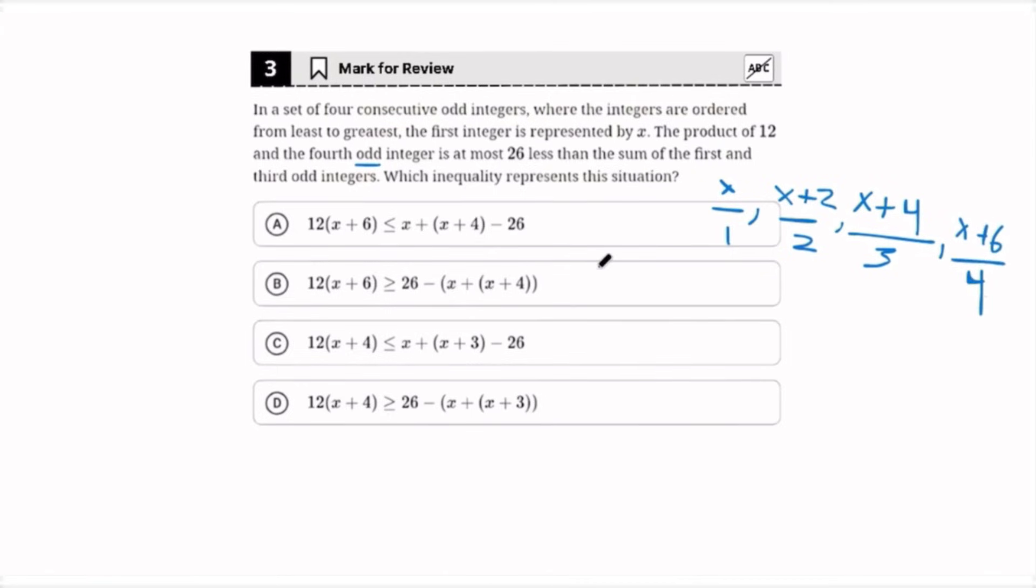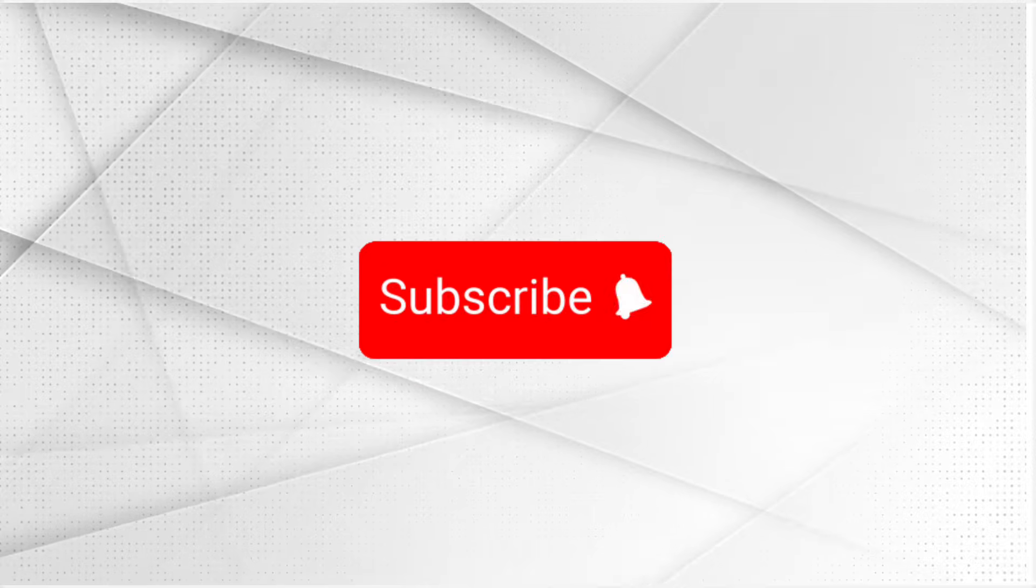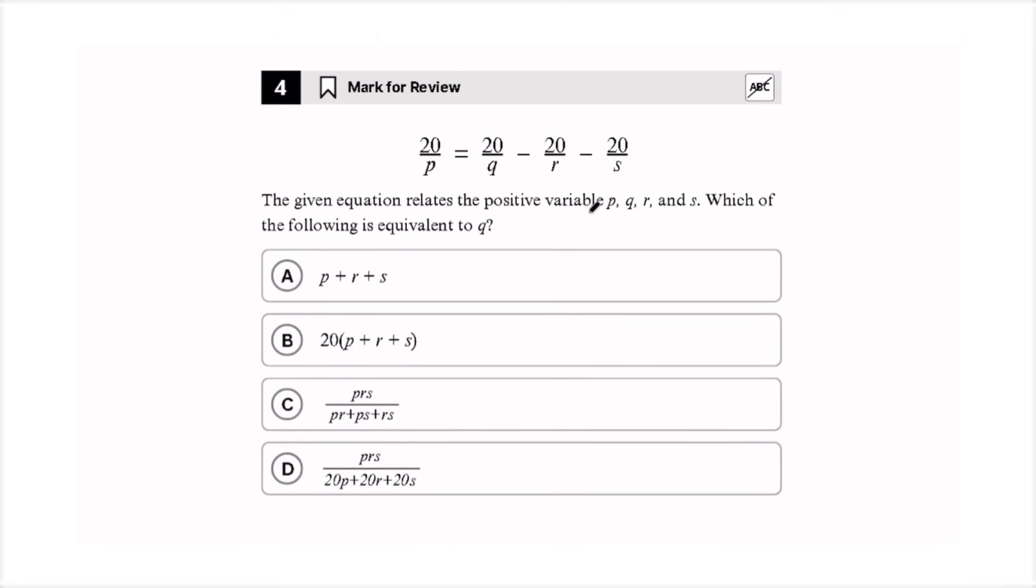Okay, and then it says the product of 12 and the fourth integer is at most 26 less than the sum of the first and the third odd integer. So we write 12 times x plus 6 is less than or equal to x plus x plus 4. And since it says it's at most 26 less, a is the answer. If you've made it this far, make sure to like and subscribe. Now let's move on to question number 4.